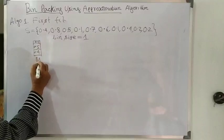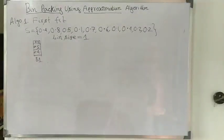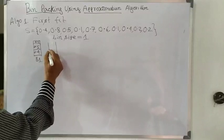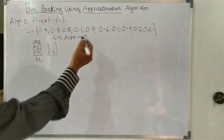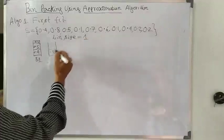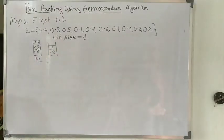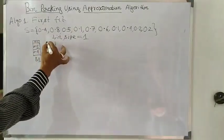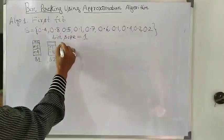So Bin 1 (B1) contains 0.4, 0.5, and 0.1. We then need another bin for the remaining elements. The next element is 0.8, so we start Bin 2 with 0.8. Going through the remaining elements: 0.7 can't accommodate, 0.6 can't accommodate, but 0.1 can fit. So Bin 2 contains 0.8 and 0.1. With 0.4, 0.2 elements considered, no vacant space remains in Bin 2.